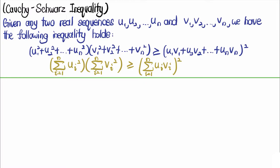The inequality states that given any two real sequences u₁, u₂, ..., uₙ and v₁, v₂, ..., vₙ, the following holds: (u₁² + u₂² + ... + uₙ²)(v₁² + v₂² + ... + vₙ²) ≥ (u₁v₁ + u₂v₂ + ... + uₙvₙ)², and this can also be rewritten using summation notation.